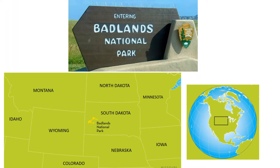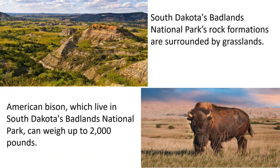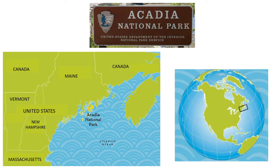Let's continue our trip as we head east to Badlands National Park in South Dakota. This park contains one of the world's richest fossil beds. Ancient mammals such as rhino, horse, and saber-toothed cat once roamed here. This national park is known for its rock formations, which are also surrounded by grasslands. The American Bison, which live in this national park, can weigh up to 2,000 pounds.